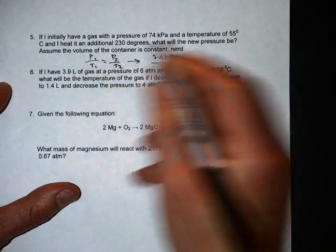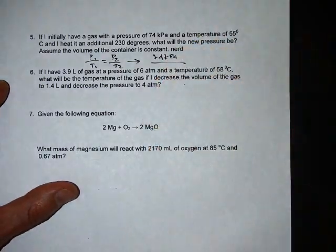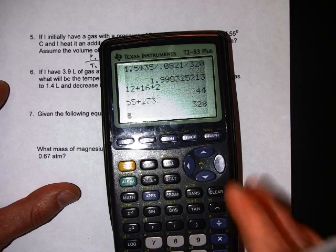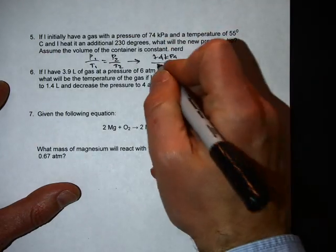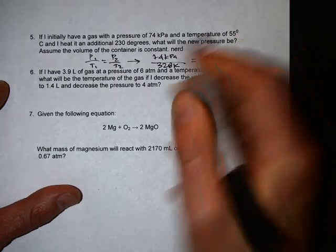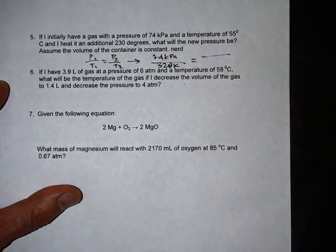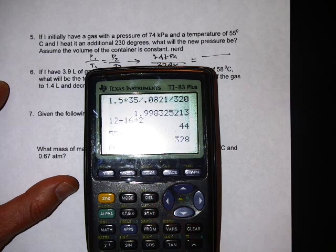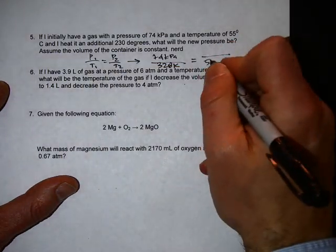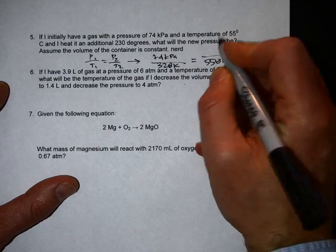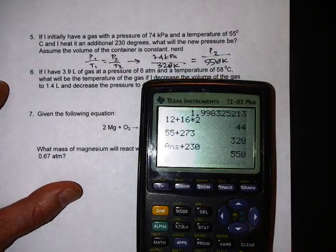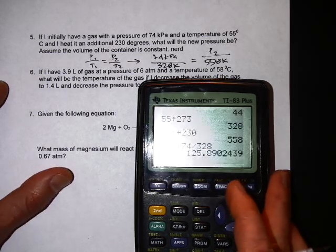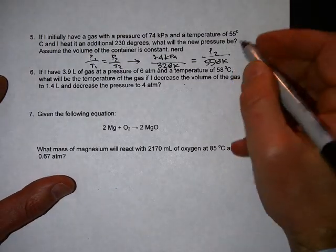So plugging it in, the first pressure is 74 kPa, the first temperature is 55 degrees celsius which is 328 plus 273, equals 328. And it goes up 230 more degrees. That's not the final temperature, that's how much it goes up, so plus 230, that equals 558. And solve for the new pressure, cross multiply and divide: 74 times 558 divided by 328, about 125.9 or so kPa.